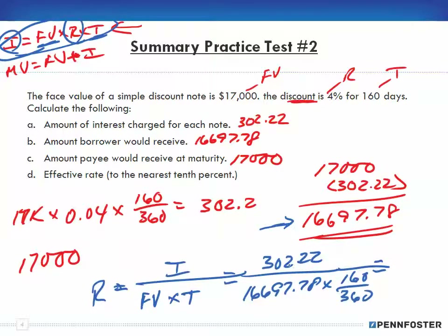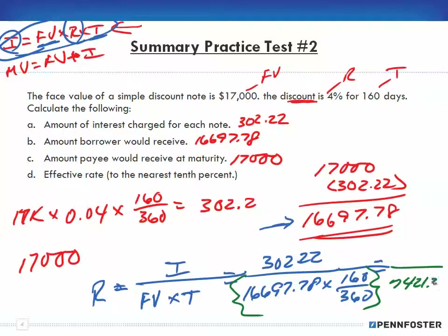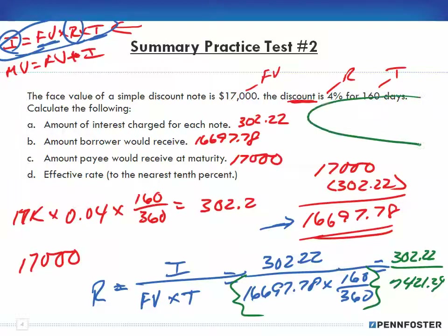The important thing is to do the math in the denominator first: take 16,697.78, multiply by 160, then divide by 360. We end up with 7,421.24 in the denominator. In the numerator we still have our interest of $302.22. So we take 302.22 and divide it by 7,421.24, and we end up with 0.0407.